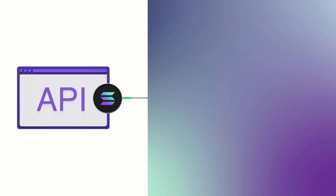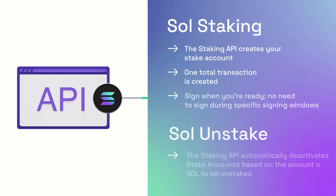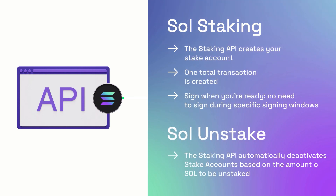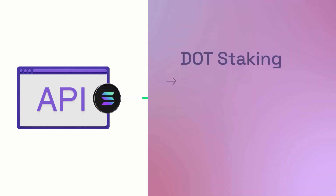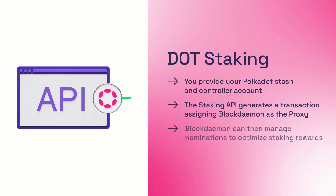For Solana, the Staking API simplifies staking to a single call and extends the signing time indefinitely. For Polkadot, we simplify nomination to validators using our Staking API.